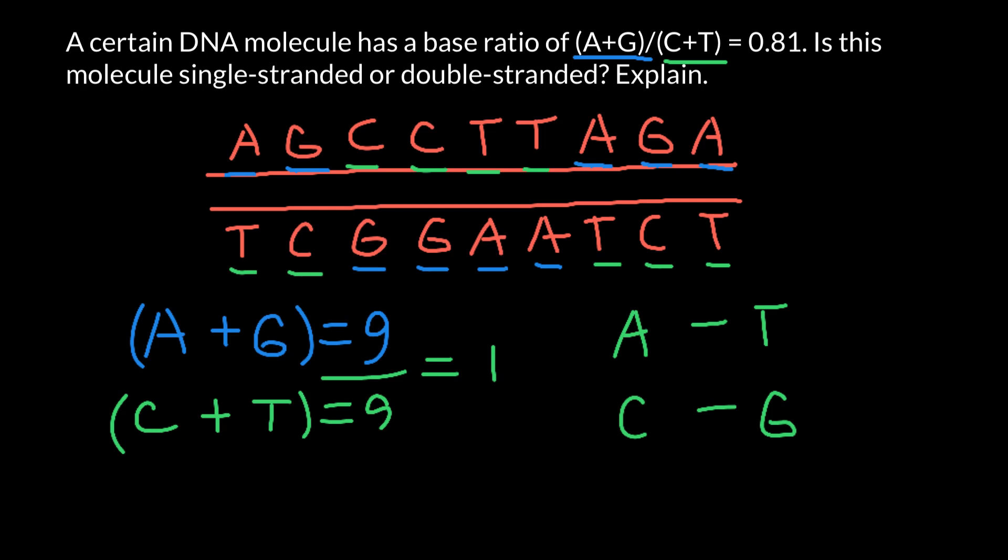So if we have, for example, say 20 bases of adenine, we also would have 20 bases of thymines. And if we have, say, 17 bases of cytosine, cytosine base pairs with guanine, that means we would also have 17 bases of guanine. And the ratio of adenine plus guanine always would equal the ratio of thymine plus cytosine.